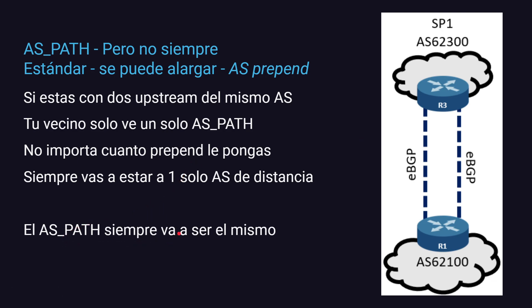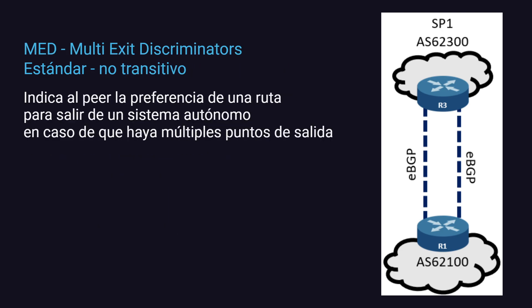¿Qué solución tenemos para este caso? El Multi-Exit Discriminator (MED): tenemos múltiples salidas y queremos realizar una discriminación de cuál es la preferida. En este caso, le vamos a indicar al peer cuál es la preferencia de ruta para salir del sistema autónomo en el caso de que haya múltiples puntos de salida. Según el valor del MED que seteemos, nuestro peer lo puede honrar o puede ignorarlo. Por eso generalmente vamos a utilizar el AS-PATH u otros métodos.